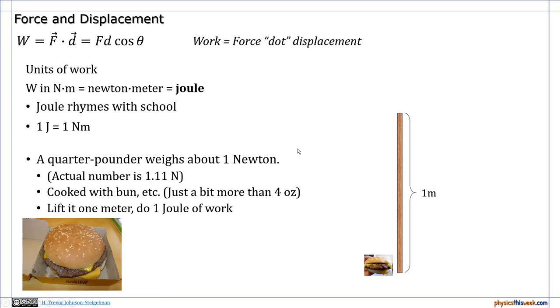To give you an example of this, a quarter pounder weighs about one newton. In actuality, it's about 1.1 newtons, but for our example, we'll just use one newton. That includes the burger cooked with the bun. It's just a little bit more than four ounces, whenever you include all that into it. If you lift it one full meter, you do one joule of work. By lifting it that distance of one meter, you just did one joule of work.